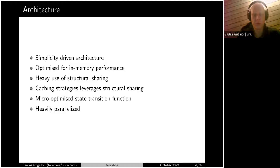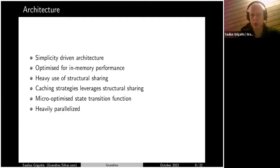There is another design aspect heavily used in Grandine: structural sharing. Whenever there is a repetition of data in memory, we try not to copy it — instead we use one instance of that data and have references to that instance. The caching strategies we use leverage this structural sharing concept. We don't have many caches where we copy the entire thing; even if we need to store something, it's usually not a copy but references to something already in memory. For the state transition function, we micro-optimized it a lot, and that's why it's much faster than other clients.